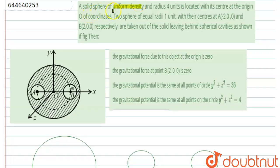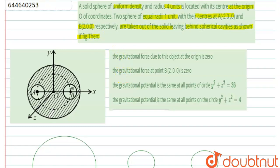Hello. The question is: a solid sphere of uniform density and radius 4 units is located with its center at the origin O. Two spheres of equal radii 1 unit, with their centers at A(-2,0,0) and B(2,0,0) respectively, are taken out of the solid leaving behind spherical cavities as shown in the figure. According to the first option, the gravitational force due to this object at the origin is 0.